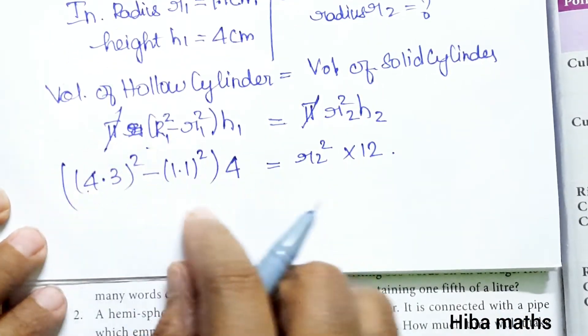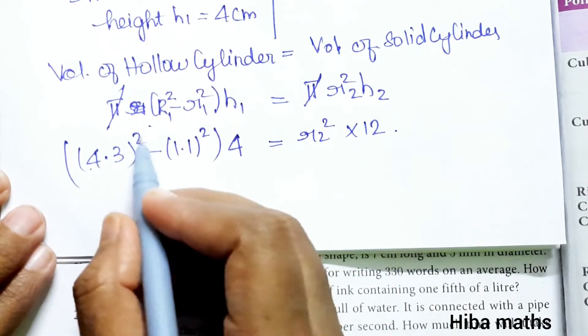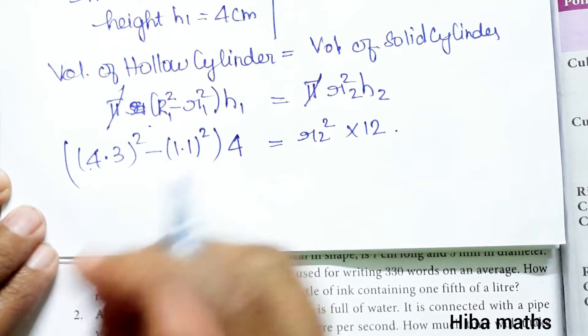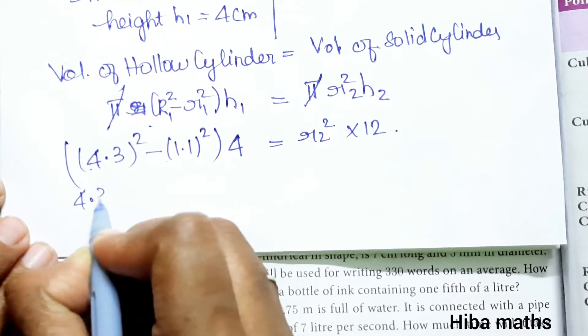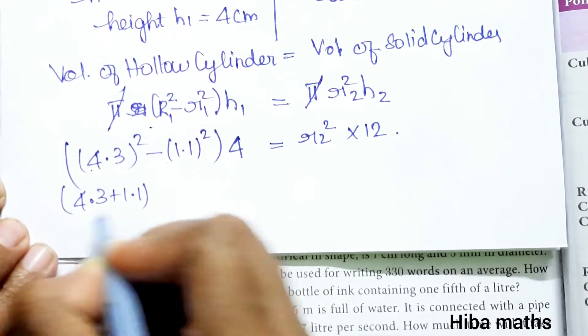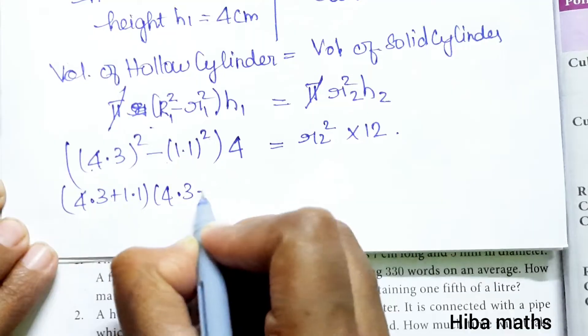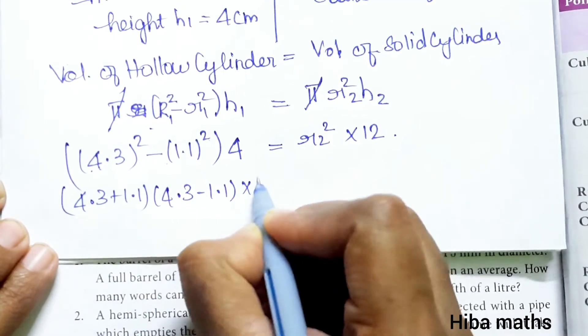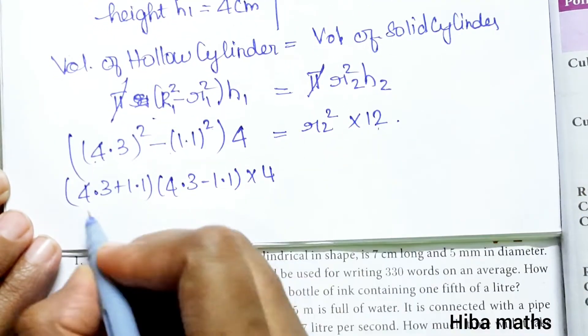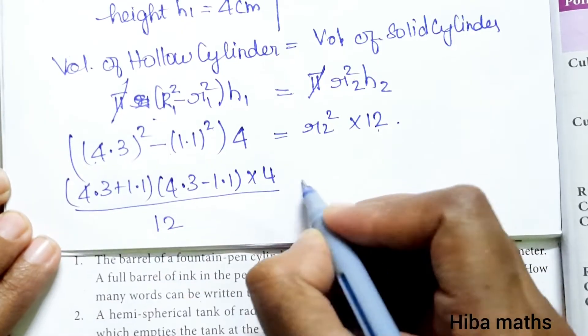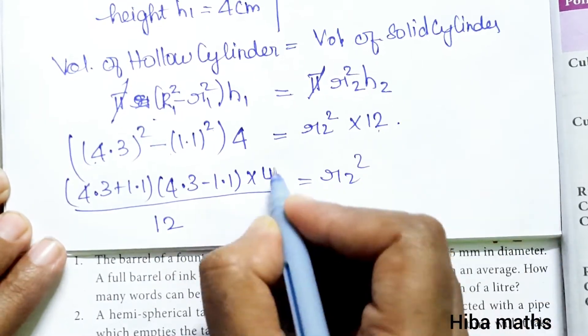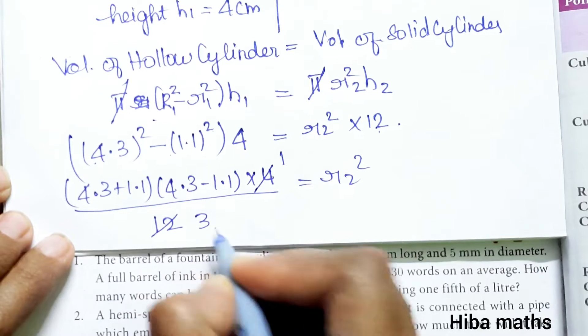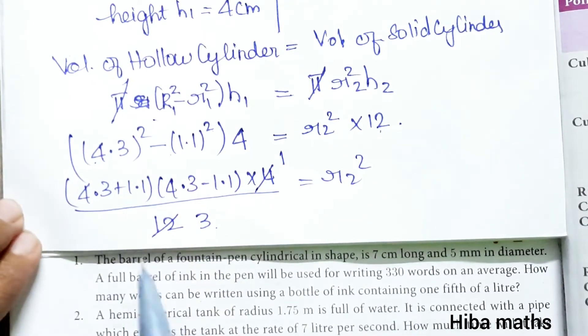Now we solve the problem using a² - b² format, which is (a + b)(a - b). So (4.3 + 1.1)(4.3 - 1.1) × 4 equals r2 squared × 12. In the next line: